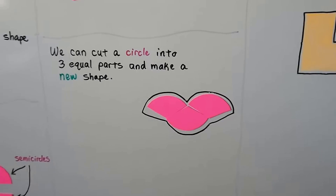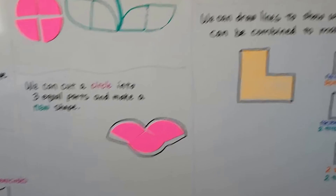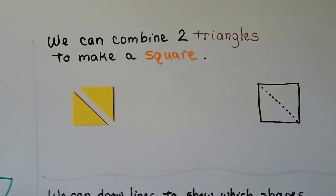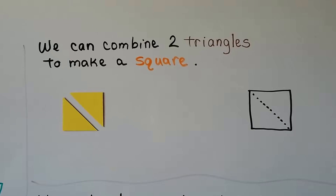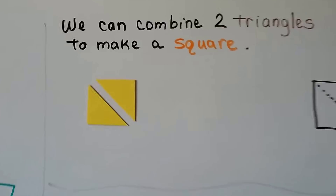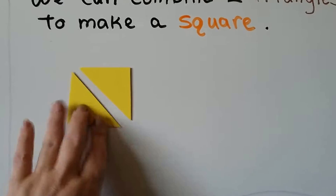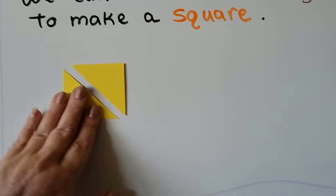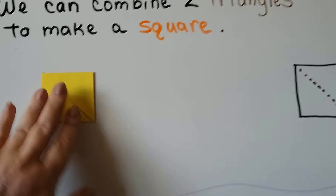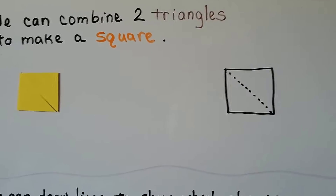It could be a hang glider or even a butterfly. We can combine two triangles to make a square — we take this triangle and this triangle and put them together and we can make a square.